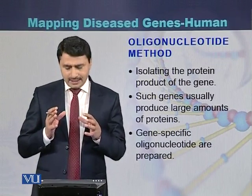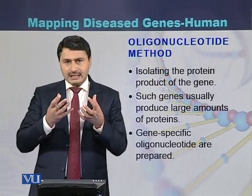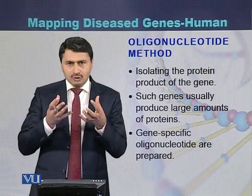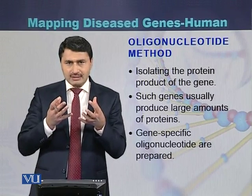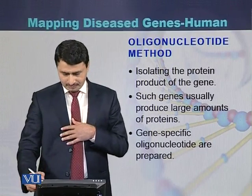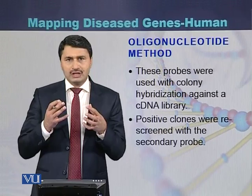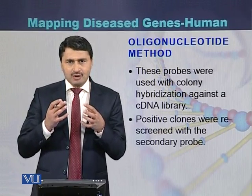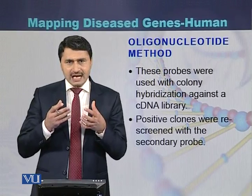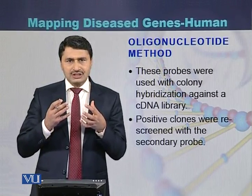In the oligonucleotide method, first a specific protein is identified — specifically proteins encoded by genes that cause certain phenotypes. Those genes produce large amounts of protein, which are then purified. Once the protein is purified, oligonucleotide probes are formed based on the protein sequence. Using those probes, cDNA libraries are screened, a particular cDNA is identified, and ultimately the gene from which that cDNA was produced is identified.